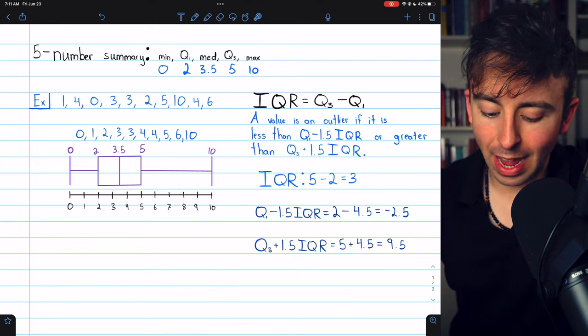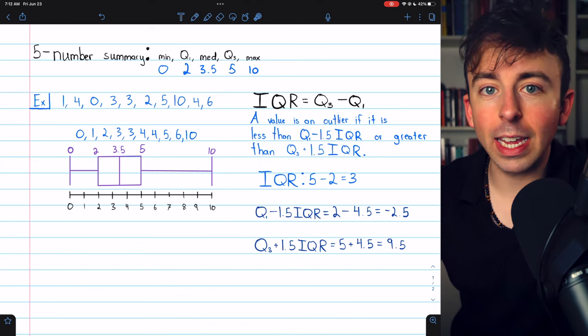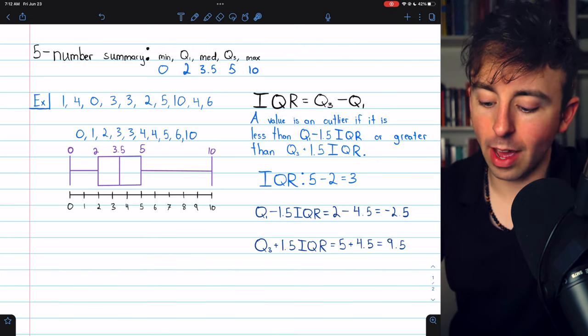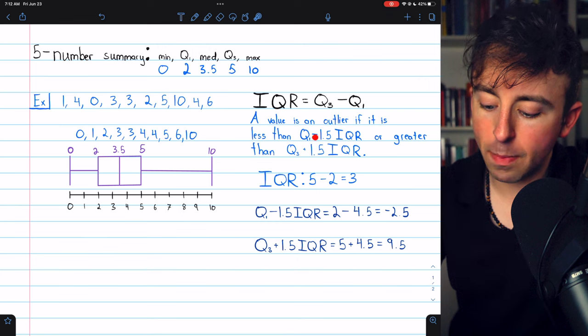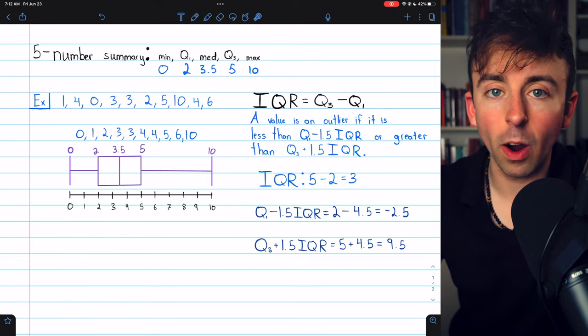We see that our maximum of 10 is pretty far from the rest of the data, and we can determine if it's an outlier using this rule of thumb. A value is an outlier if it's less than Q1 minus 1.5 times the IQR, or greater than Q3 plus 1.5 times the IQR.